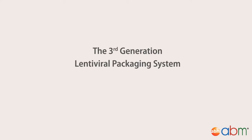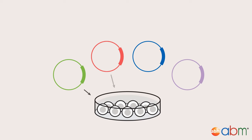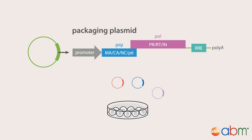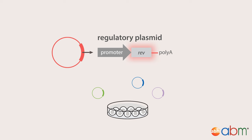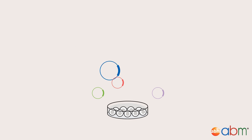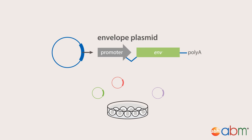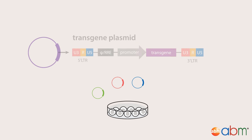To almost completely eliminate dangerous lentiviral recombination events, an even safer third generation system was created. In this system, the viral genome is split into four plasmids: a plasmid containing only the packaging genes Gag and Pol, a plasmid with only the regulatory gene Rev, a plasmid carrying only the envelope gene, and a transgene plasmid. In addition, the LTRs flanking the transgene are further modified as they contain enhancer and promoter regions that can activate adjacent cellular proto-oncogenes.